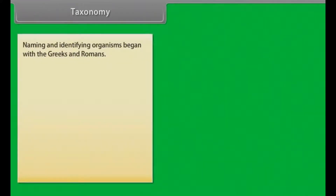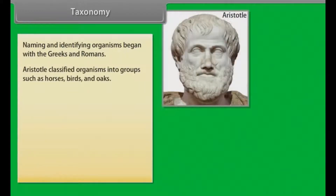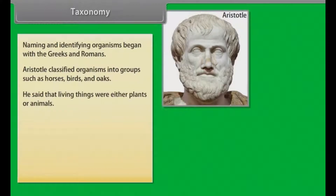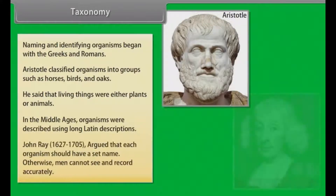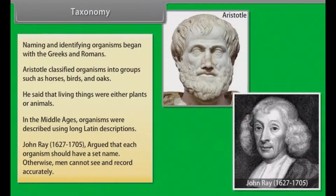Taxonomy: naming and identifying organisms began with Greeks and Romans. Aristotle classified organisms into groups such as horses, birds and oaks. He said that living things were either plants or animals. In the Middle Ages, organisms were described using long Latin descriptions. John Ray (1627 to 1705) argued that each organism should have a set name, otherwise men cannot see and record accurately.